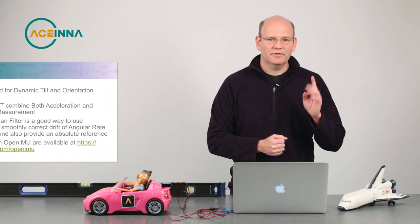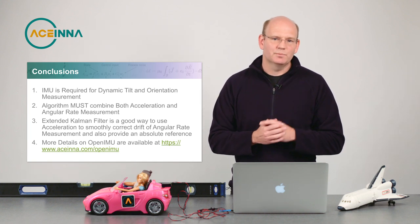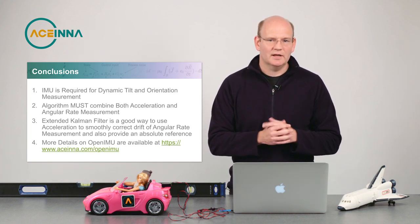So in summary, we have implemented an accurate dynamic tilt measurement. To do that, we needed four things. The first is an IMU. The second is an algorithm that combines both the acceleration and the angular rate measurement.